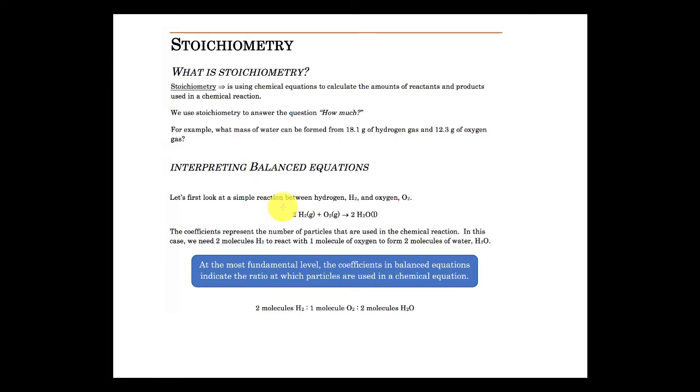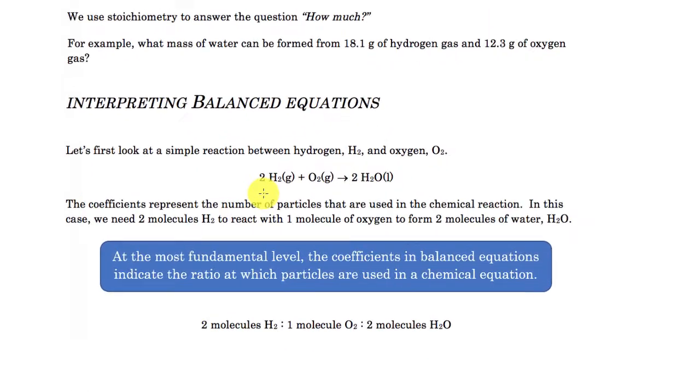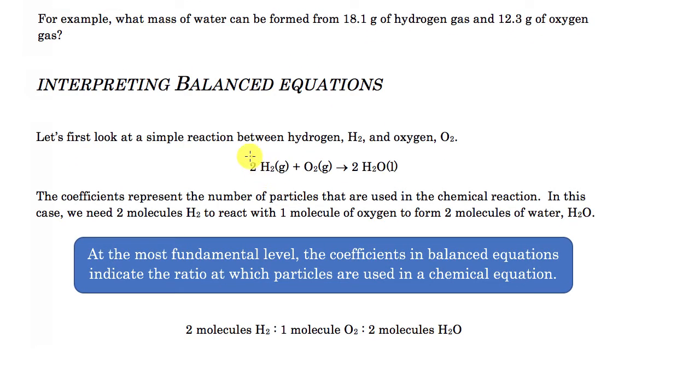So in order to understand stoichiometry what we first need to do is be able to interpret the balanced equation. I know we've talked about this before, but we want to look at this again in a little more detail. So we look at the reaction between hydrogen and oxygen. What we find is that we get two molecules of hydrogen to react with one molecule of oxygen to produce two molecules of water. That's what the coefficients represent. That's basically what they're telling us.